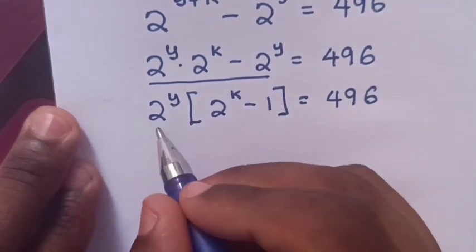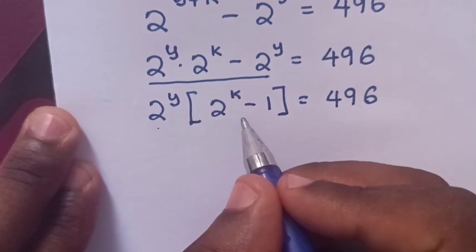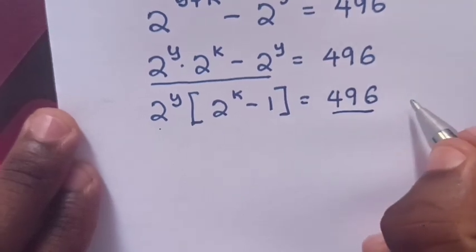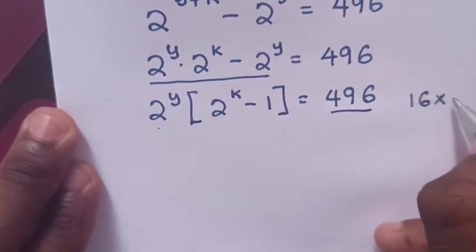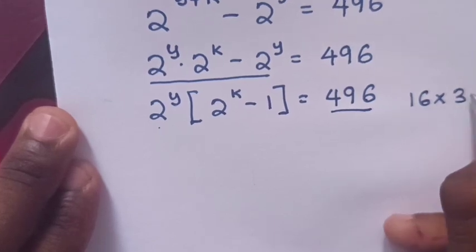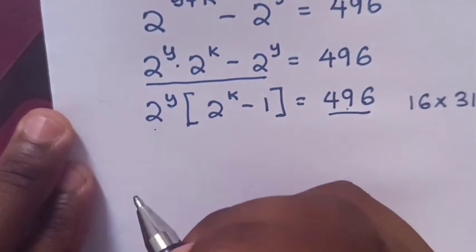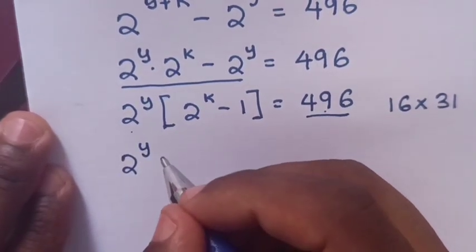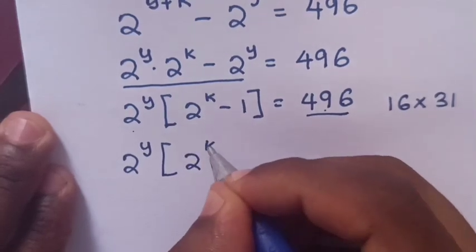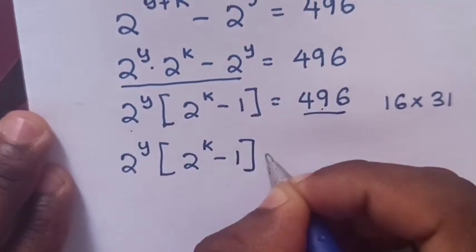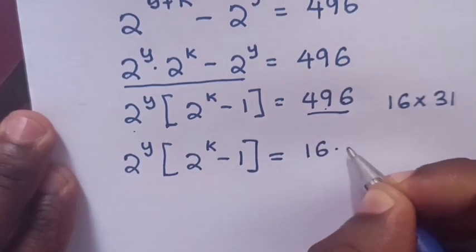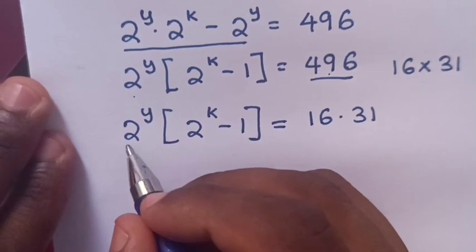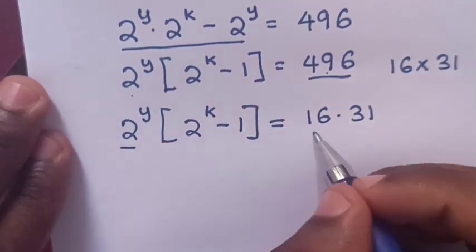Now we can see there is multiplication of 2 power y and this bracket, so 496 is multiplication of two numbers, which is 16 times 31. So our equation will be 2 power y times 2 power k minus 1 equals 16 times 31.